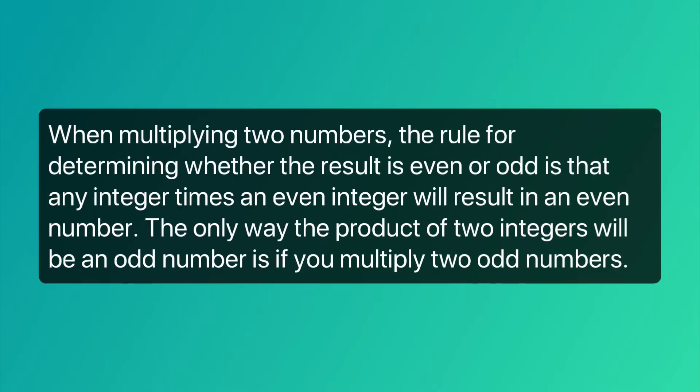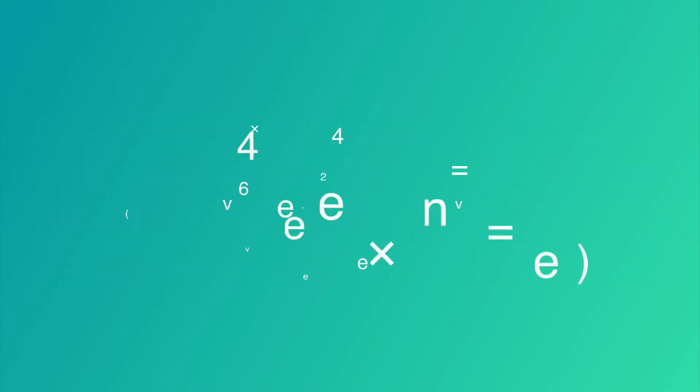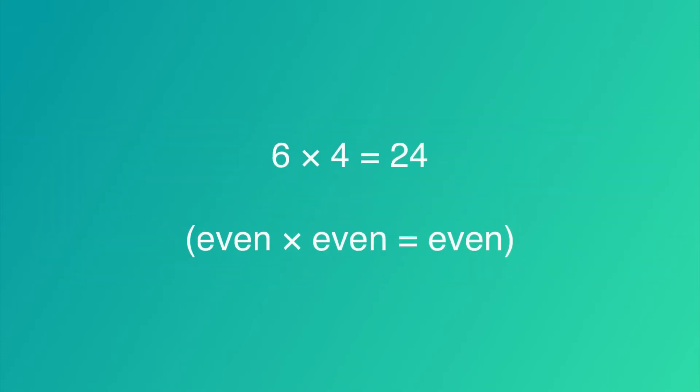When multiplying two numbers, the rule for determining whether the result is even or odd is that any integer times an even integer will result in an even number. The only way the product of two integers will be an odd number is if you multiply two odd numbers. For example, 6 times 4 equals 24. That's even times even, which equals even. 3 times 4 equals 12. That's odd, even, which equals even. 3 times 5 equals 15. That's an odd number times an odd number, which equals an odd number.